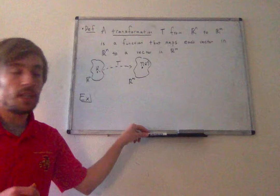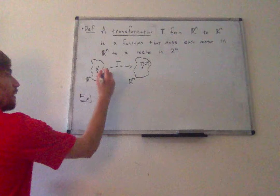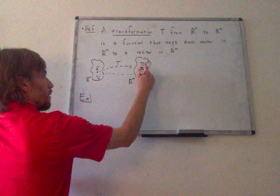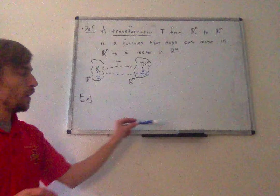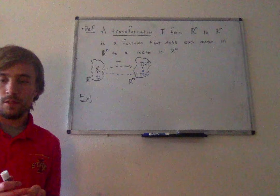I might have another vector w here, and w would get mapped to maybe the same vector, maybe a different vector — we're not sure. It'll just get mapped to some vector T(w). All of these vectors would just get mapped, following their path into Rm. We have a lot of names for all of the different things going on here.